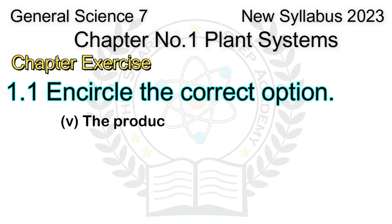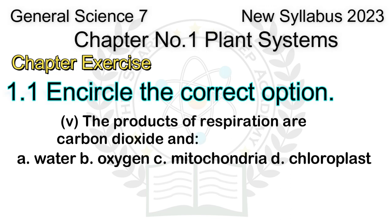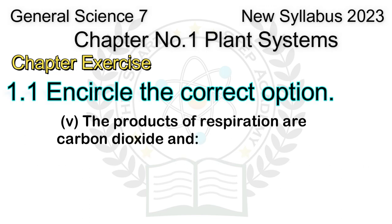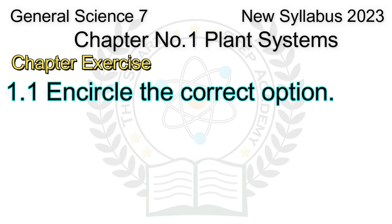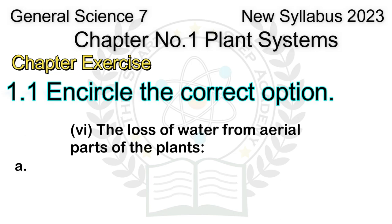Question 5: The products of respiration are carbon dioxide and: A. Water, B. Oxygen, C. Mitochondria, D. Chloroplast. Answer: A. Water.